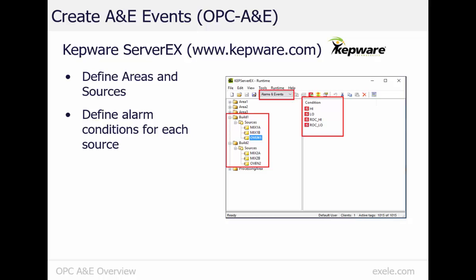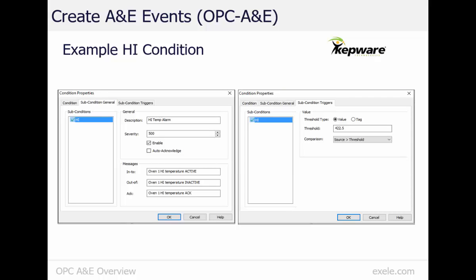Within each alarm condition, I can define the alarm threshold or limit, severity, and custom messages for into alarm, out of alarm, and acknowledge events. As an example condition configuration, here's how I configured the high temperature alarm for Oven 1. In the left screen, I configured the severity and messages for the three condition events: into alarm, out of alarm, and acknowledge events. In the right screen, I configured the alarm limit value. My oven temperature high limit is 422.5 degrees.